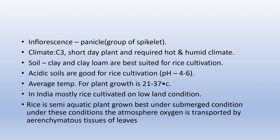The inflorescence of cereals is generally called panicle or spikelets, except in maize where the inflorescence is called tassel and silk. Regarding climate: rice is a C3 plant, a short-day plant, and requires a hot and humid climate. Regarding soil: rice requires clay and clay loam soil, which is best suitable for rice cultivation. Acidic soils with pH around 4–6 are good for rice cultivation.